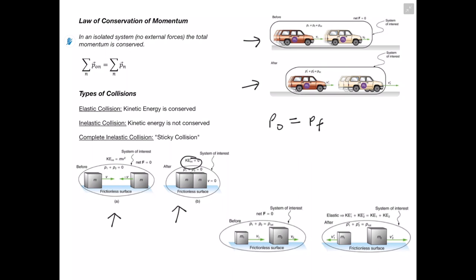In the last example, two objects with different masses move in the same direction and collide. One of the objects even changes direction after the collision. However, this is an elastic collision, so masses are conserved and velocities are conserved. Therefore, kinetic energy is also conserved, as shown here. Alright, that's all for this video. Thanks for watching.